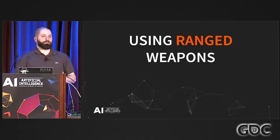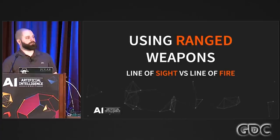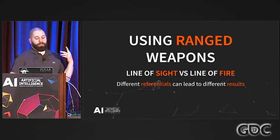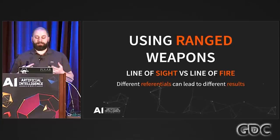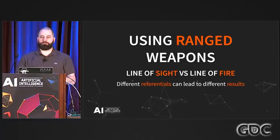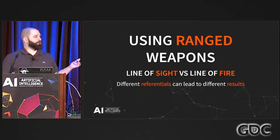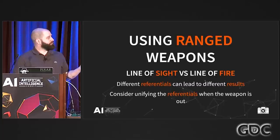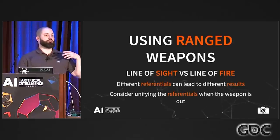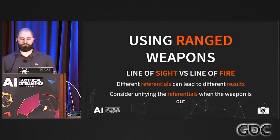Using ranged weapons can also lead to issues. There's quite a difference between the line of sight and line of fire because most NPCs will have their gun at a lower level than their eyes. Having two different referentials can give different results — the NPC sees its target but there's no line of fire, so it goes back to decision making thinking it can't shoot. One solution I used is to unify the referentials as soon as the weapon comes out: the NPC starts seeing from its gun or shooting from its eyes. Most of the time, it's better to just see from the gun.